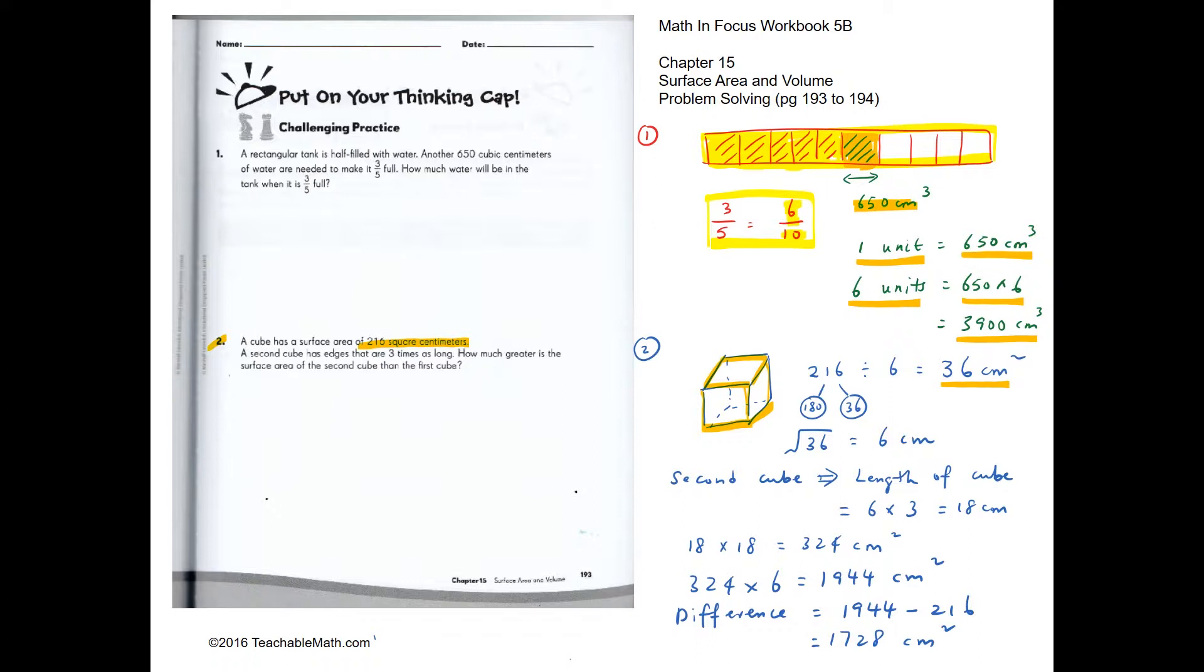After we have the surface area of one face, we have to find the dimension of the edges. This is the area of a square. It is 36 cm squared, so the sides will have to be 6 and 6. So one side has to be 6.